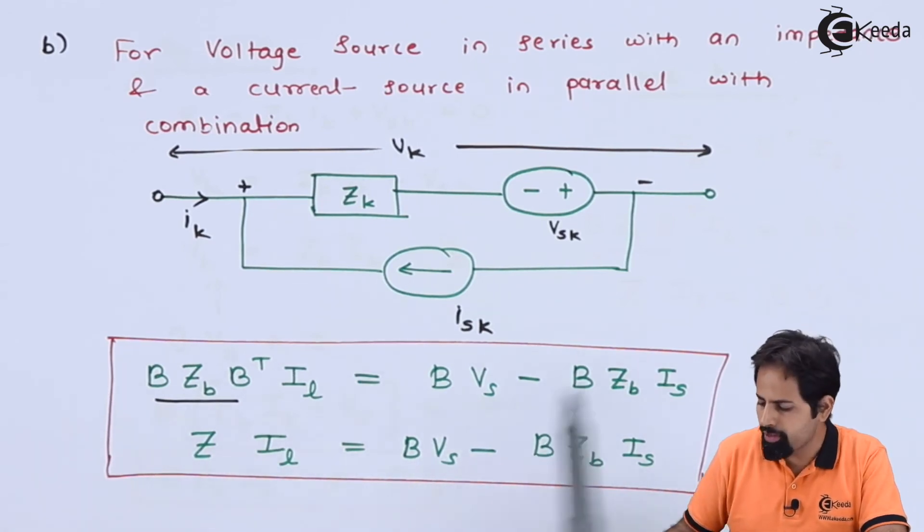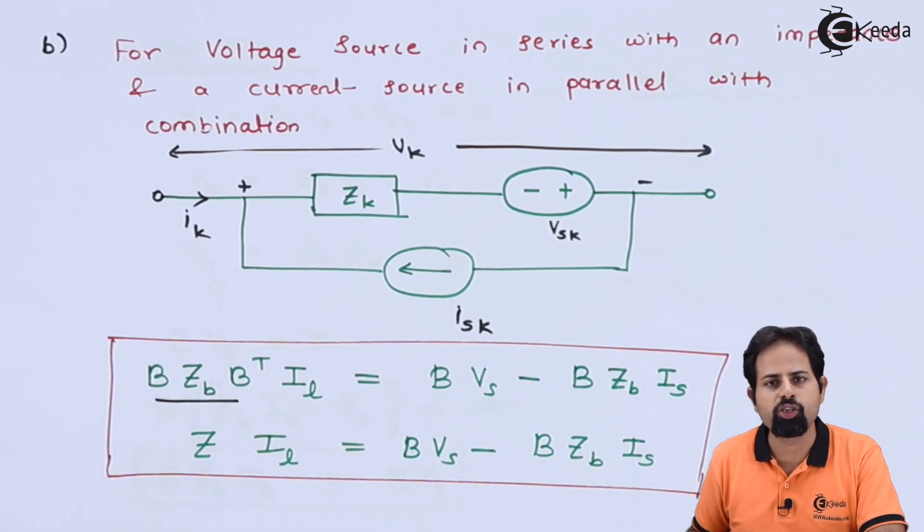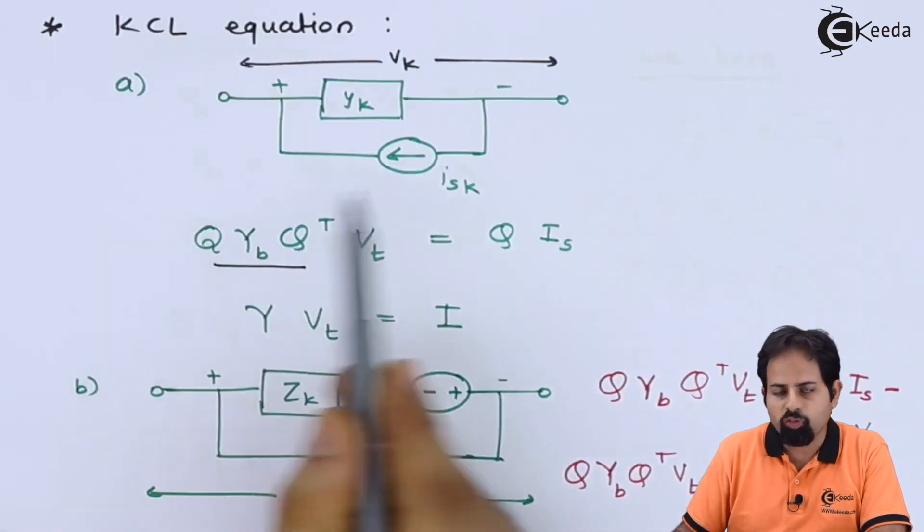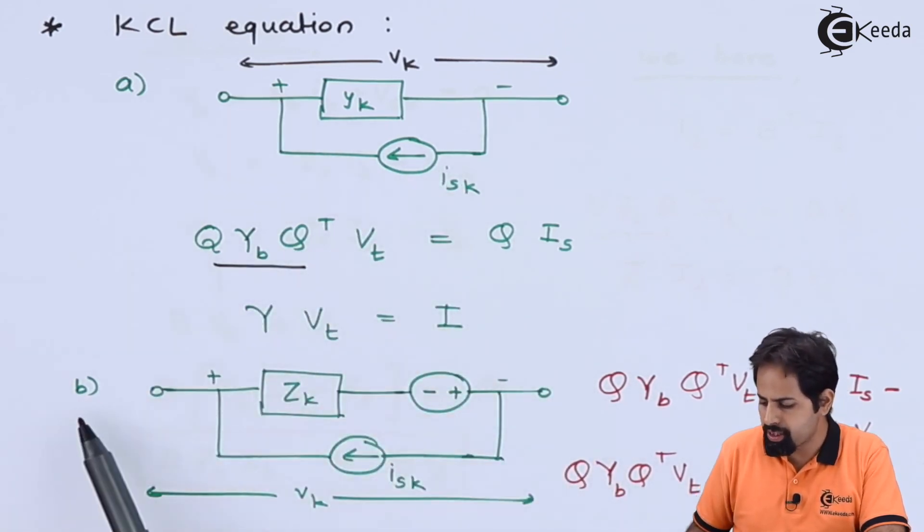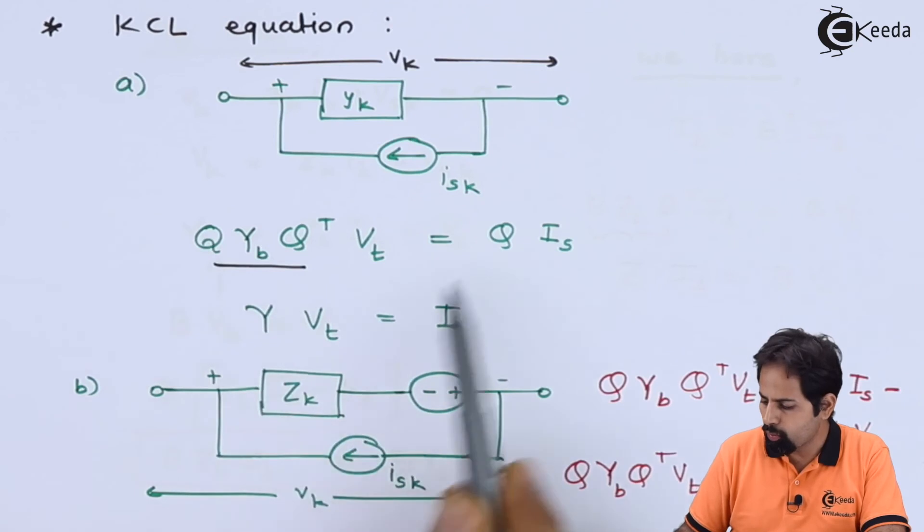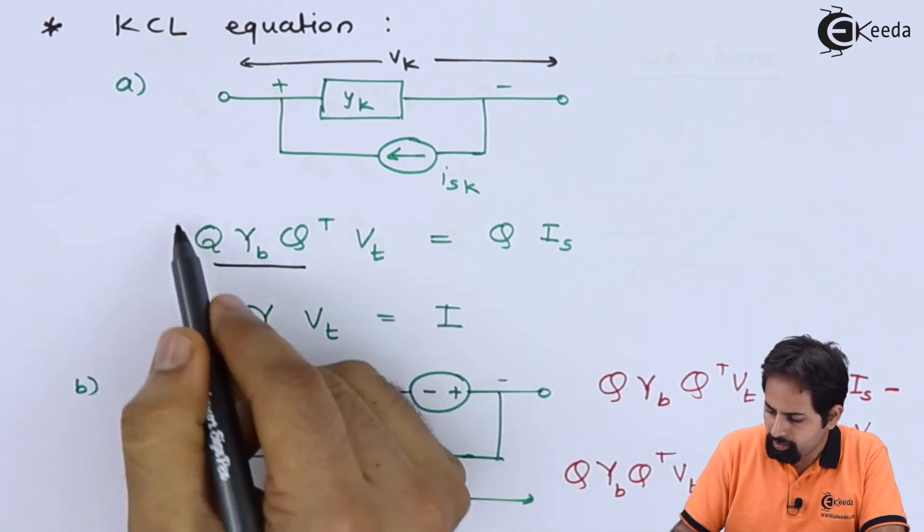Now for KCL also, we will directly use formula. So for KCL, you can see this is step A or part A and this is part B, and for both these parts, these are the respective formulas.